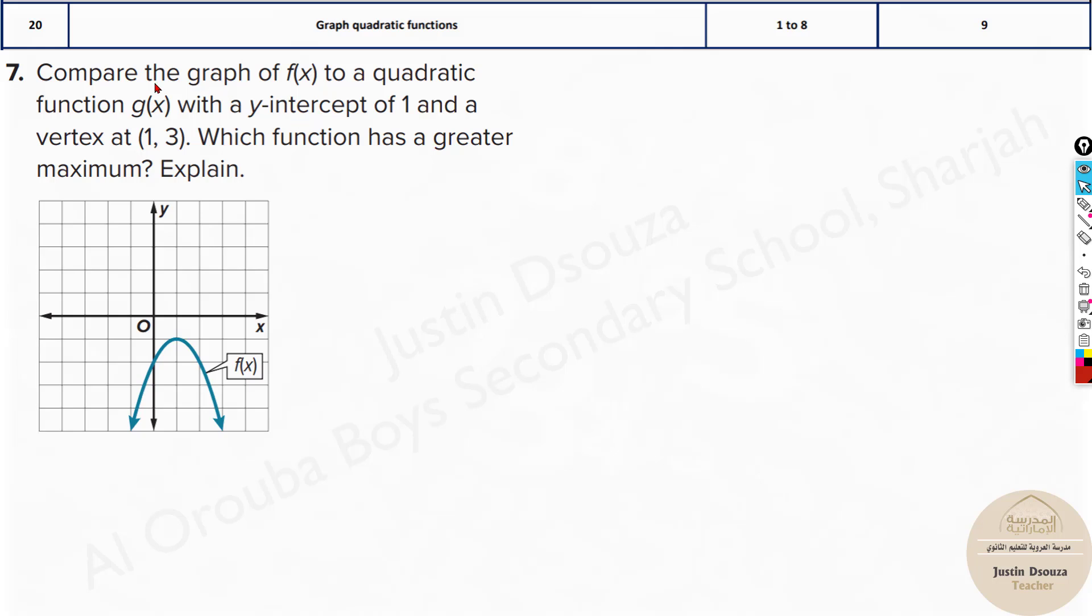Here, we have some interesting problem. They have told to compare graphs. Compare the graph of f(x) to a quadratic function g(x) with y-intercept 1 and a vertex of (1, 3), find which function has greater maximum. Now, what is y-intercept? y-intercept is this point. Can you see over here? This point, the part of the graph which touches the y axis, that is at -2 for the graph f(x). But here, there is no x-intercept. Why? Because x-intercept is the part of the graph which touches the x axis. There is only y-intercept here. Now, they have told one more graph is having y-intercept of 1.